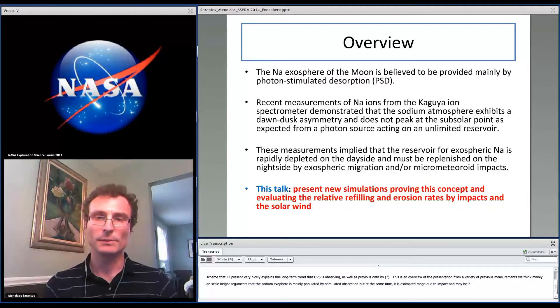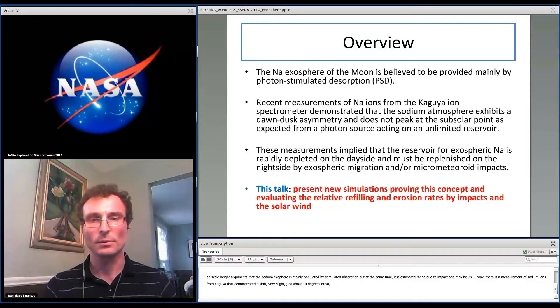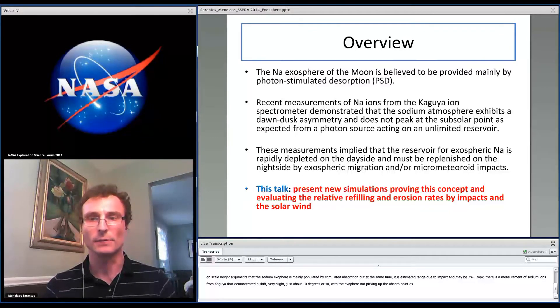Now, recent measurements of sodium ions from Kaguya demonstrated a dawn-dusk asymmetry, very slight, just about 10 degrees or so, with the exosphere not peaking at the subsolar point as would be expected from a photon source acting on an unlimited reservoir.